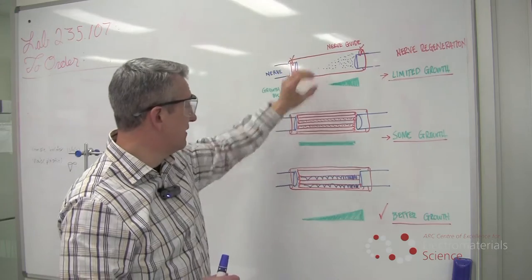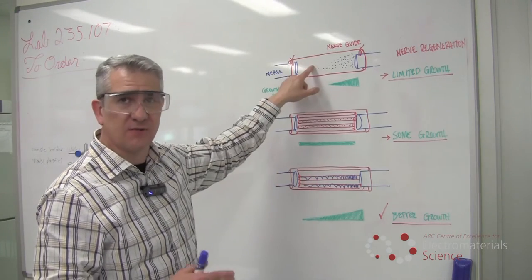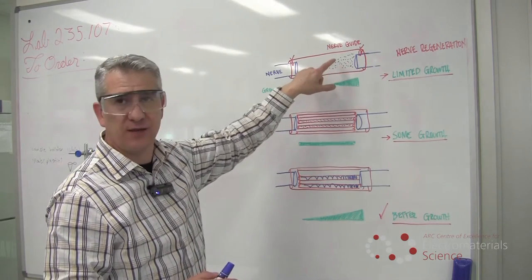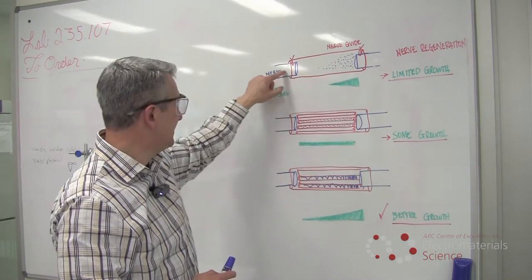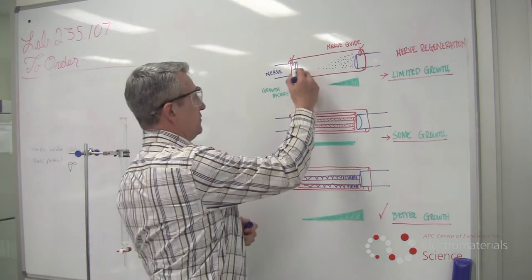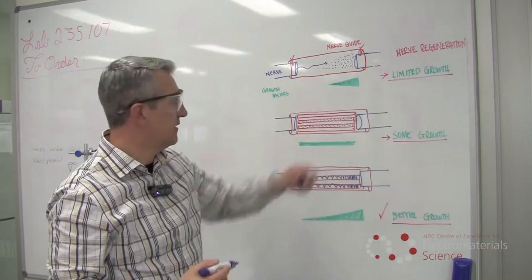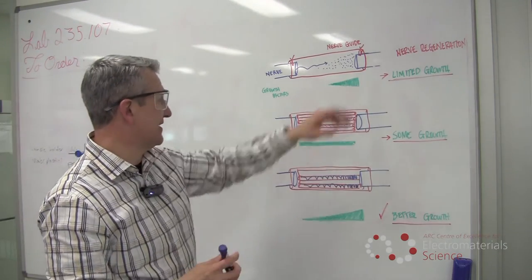And that nerve guide serves as a reservoir where growth factors from this end are released, as shown here by these blue dots, and this nerve senses those and grows towards that, eventually reconnecting the two transected nerves.